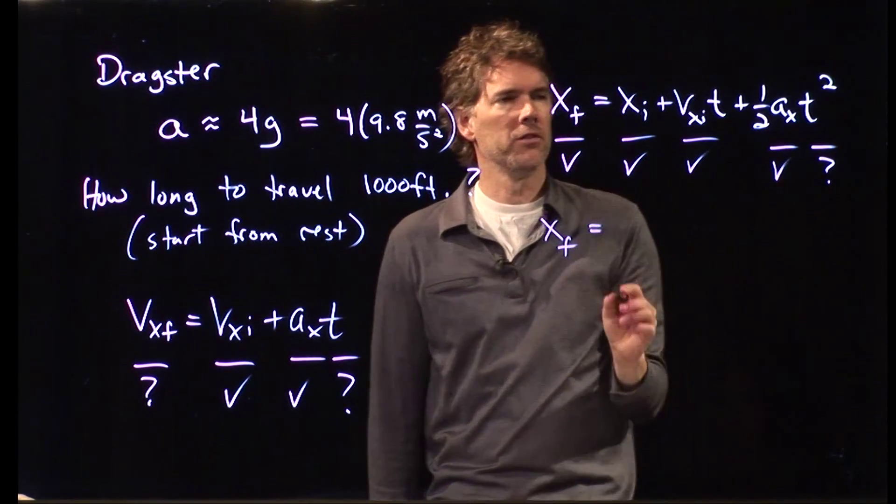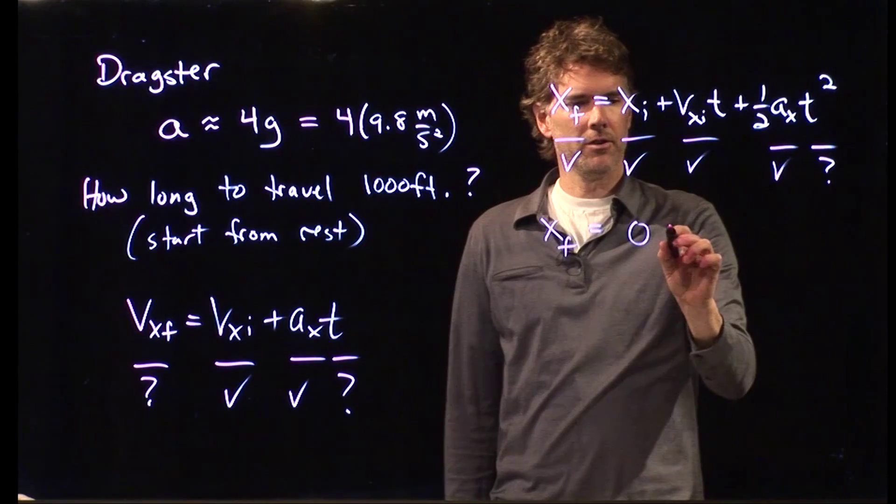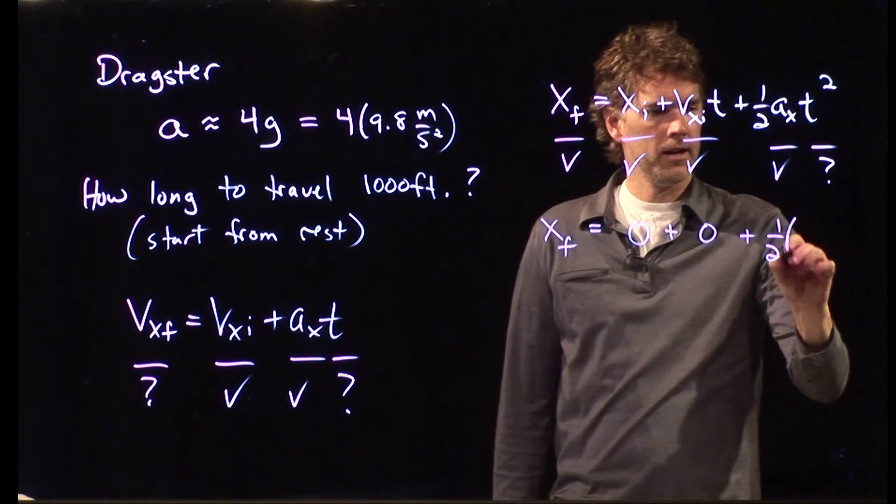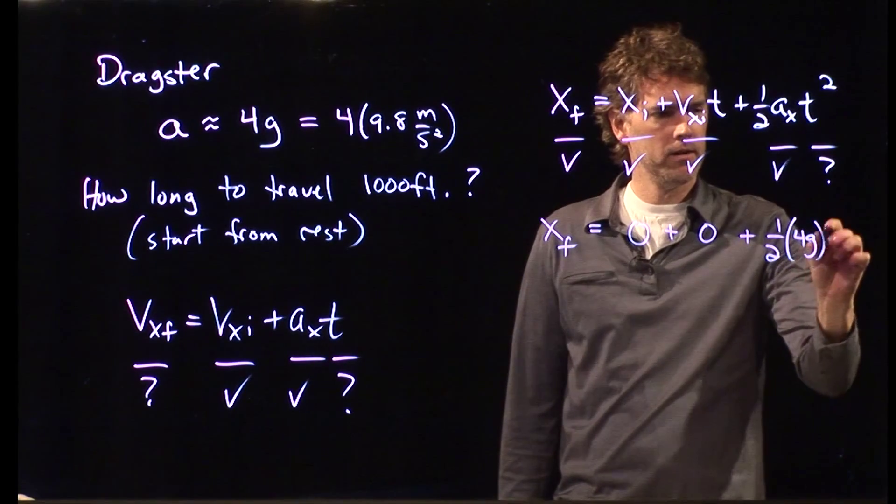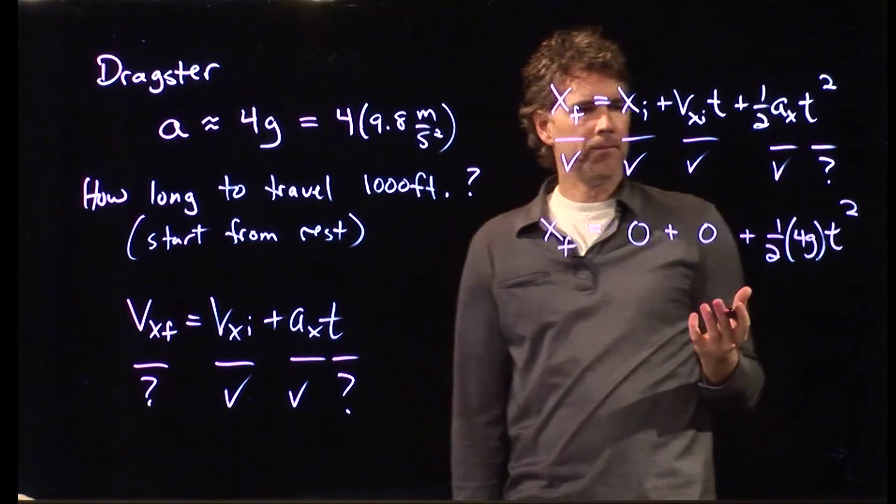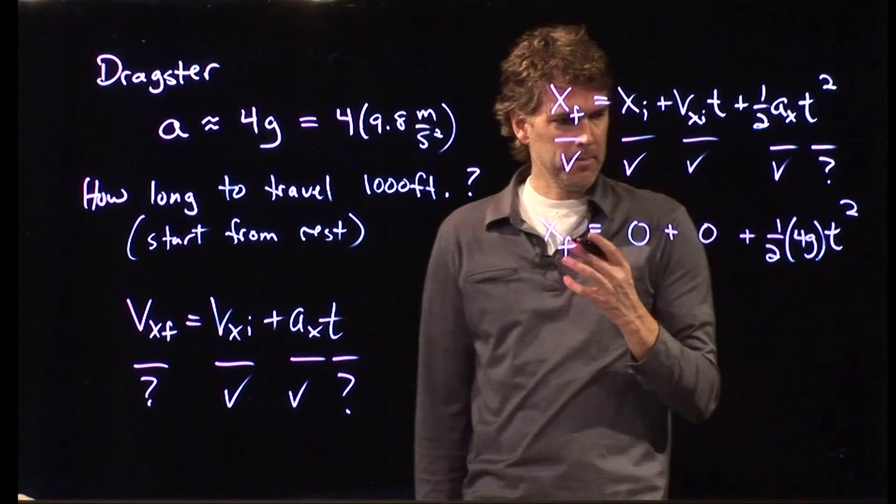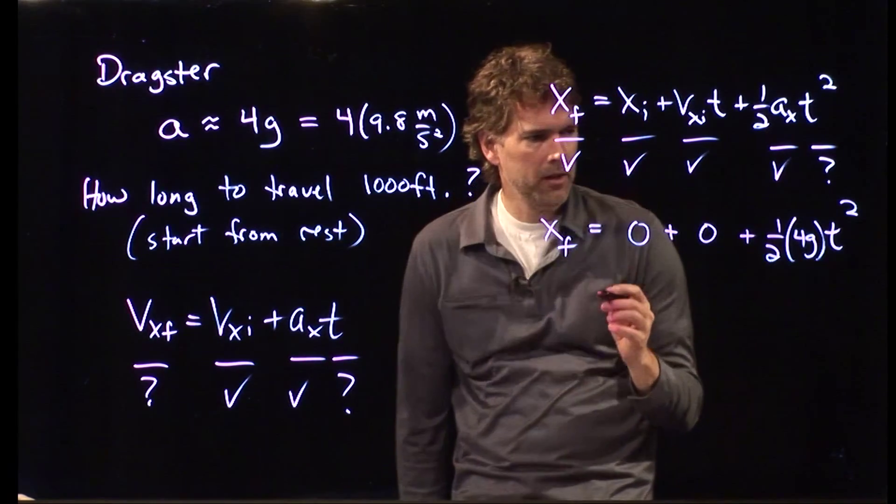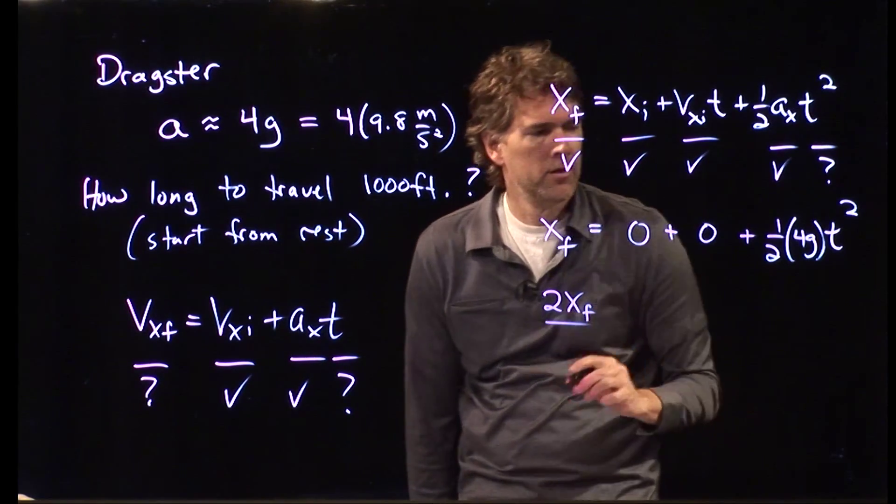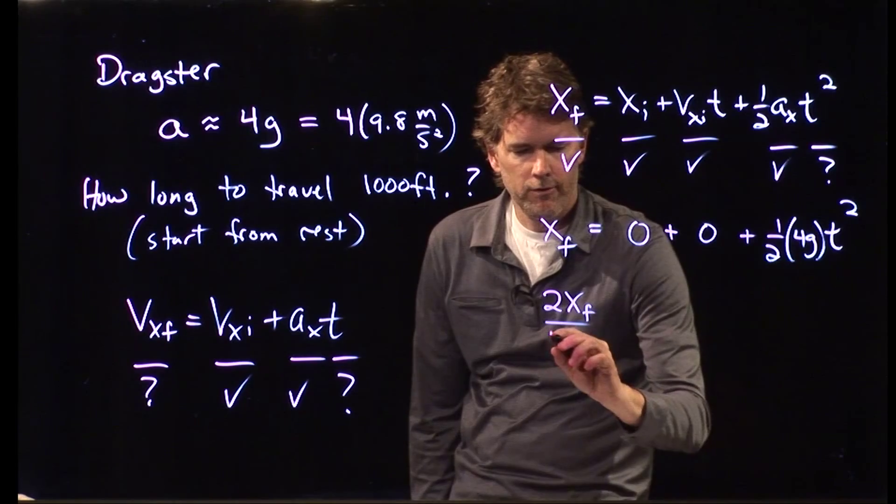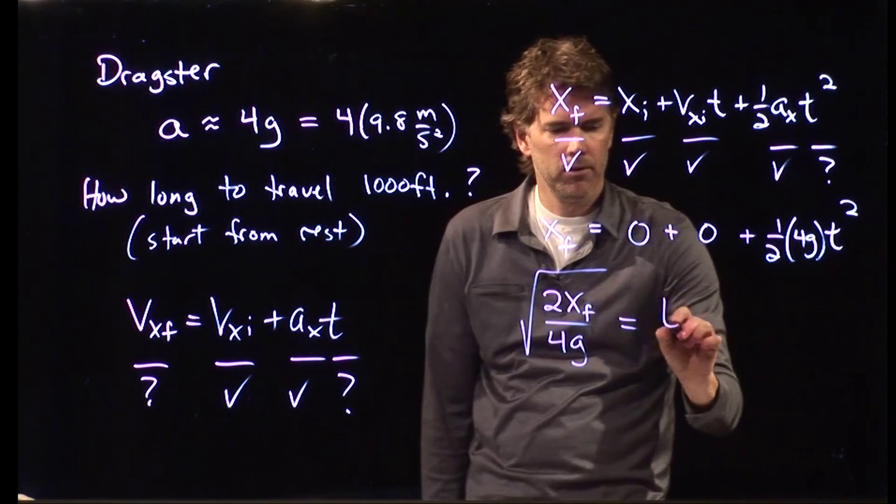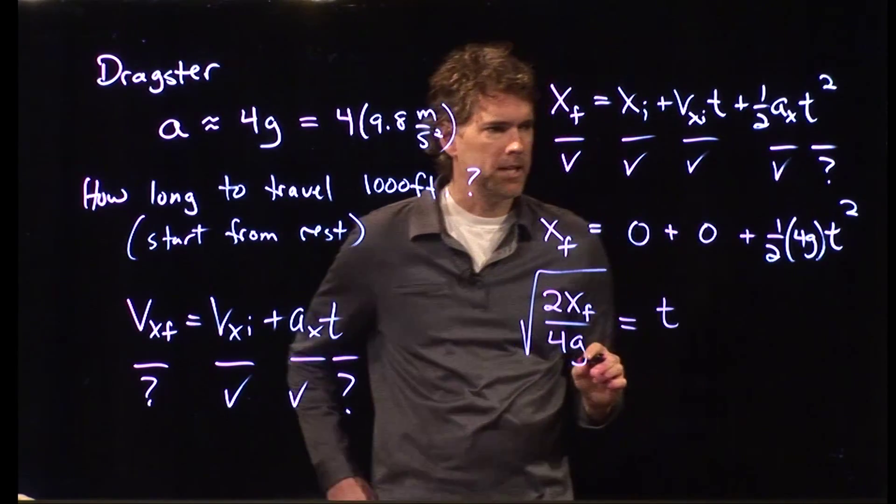So let's just rewrite this and let's put in some of the zeros. Start at zero. Start at rest. Accelerate at 4g. And now we can just solve this thing for t. And you can double-check my math, but I would say that we get the following: 2xf over 4g square root is equal to t.